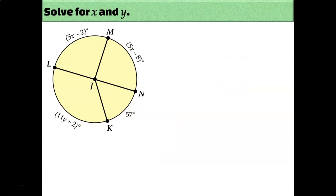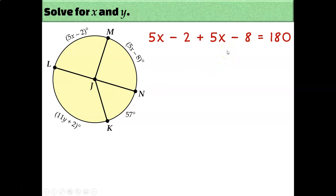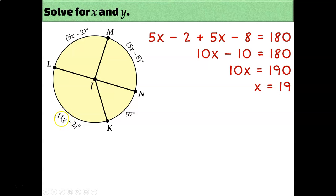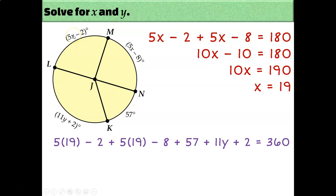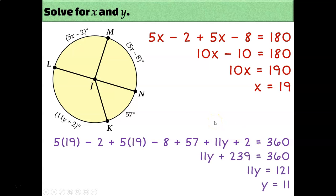The next problem has two variables — X and Y. Let's solve for X first. Arc LMN is a semicircle, so the two arcs add up to 180: (5X minus 2) plus (5X minus 8) equals 180, giving X equals 19. Then, since the full circle is 360, we add (5X minus 2) plus (5X minus 8) plus 57 plus (11Y plus 2) and set it equal to 360. Plugging in 19 for X and solving, Y equals 11.